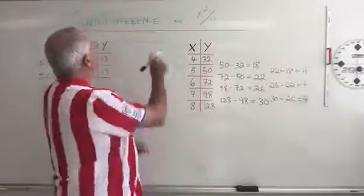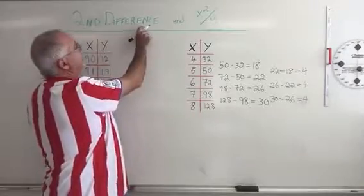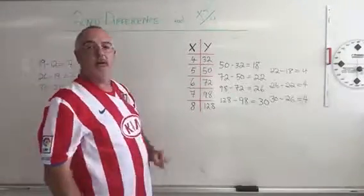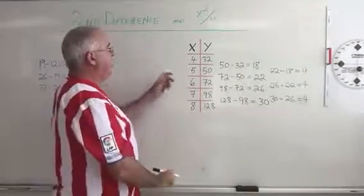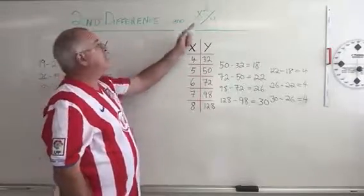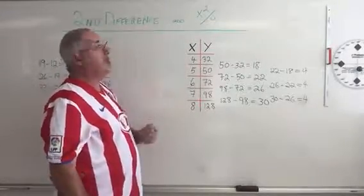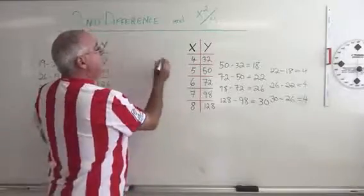But there's another trick that I can do. We're not only looking at second difference, we're also looking at this, x squared divided by y. If I take the x coordinates and square them, and then divide by the y coordinates, will I get a constant answer?